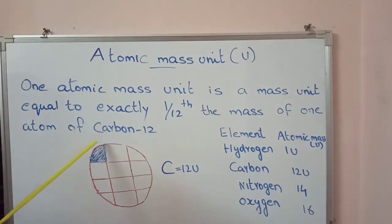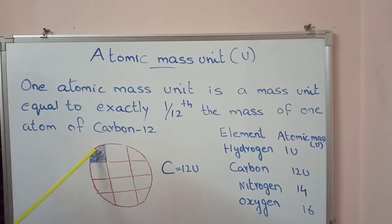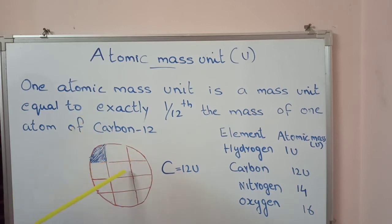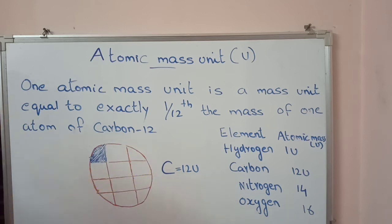If we divide this carbon-12 into 12 equal parts — 1, 2, 3, 4, 5, 6, 7, 8, 9, 10, 11, 12 — then each part is 1/12 of this carbon atom. And this 1/12 part is 1 u. If we take 2 parts together, that is 2 u. 3 parts is 3 u, then 4 u, 5, 6. This part is 6 u. That means the mass of half of this carbon is 6 u.